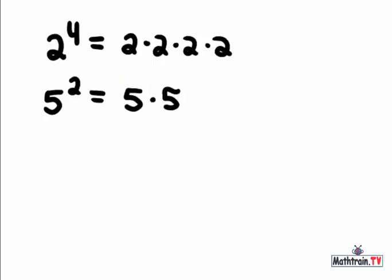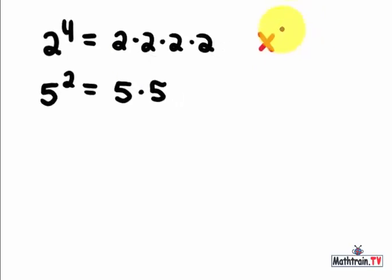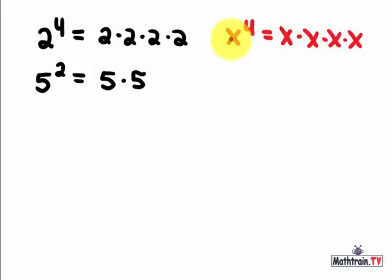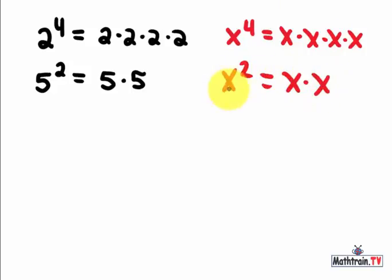If I had a variable like x to the fourth power, I could expand that to x times x times x times x, the base being x, and it's being used as a factor four times — one, two, three, four. Or if I had x to the second power, well that's simply just x times x, the base x being used twice as a factor.